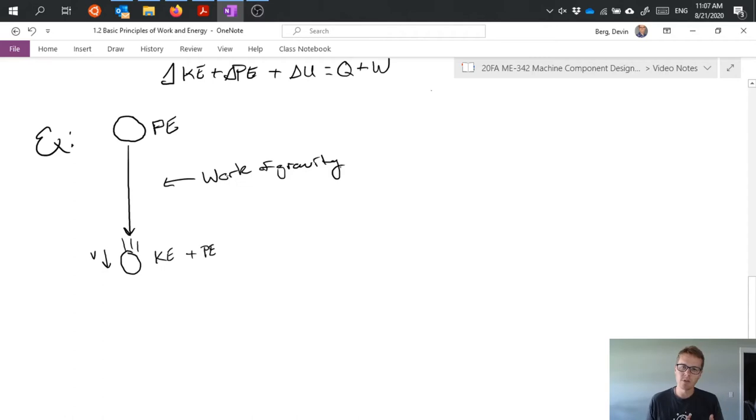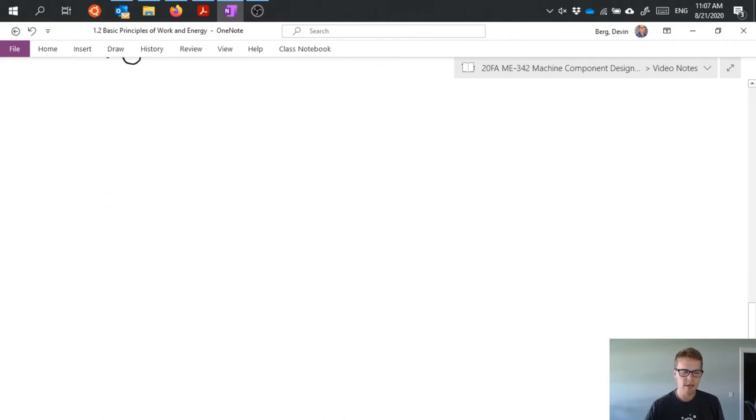But increases in velocity, we have the work of gravity being done on this system. So, gravity applies a force to our mass, moves that mass by a certain distance, that's work. That's our definition of work, f times d. So that's gravity doing work on our system. So, let's look at an example.